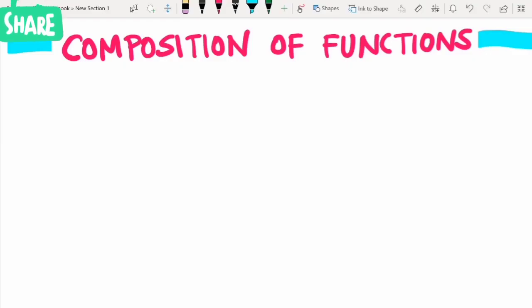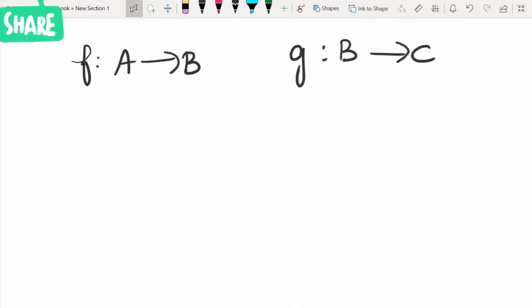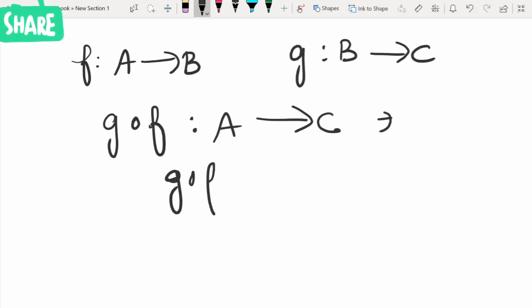Hello everyone, welcome to one-stop mathematical solutions. Today we are going to see about the composition of functions. Say we have two functions f from A to B and g from B to C. Let's consider these two functions and define g composition f as a function from A to C.